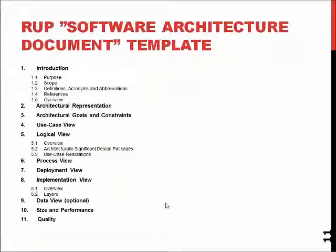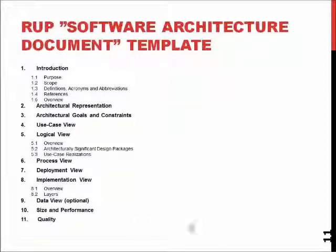One way to describe what a software architecture document looks like: it has the 4+1 views, it has the quality definition, and it has the size and performance, and what sort of data we will be handling. With games, we add how the game story works out. With a network application, we have more defined protocols and system behavior. With a multi-platform system, we might have an addendum describing the different ways the software is controlled across desktop, mobile, or other platforms. For an open data application, we might define the open access interface and how we will use it.